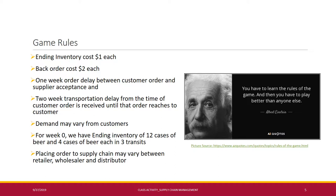Now let us know the rules of the game. As Albert Einstein said, you have to learn the rules of the game and then play better than anyone else. The first rule relates to inventory: you have to find out the total ending inventory cost, and each ending inventory item costs around $1.